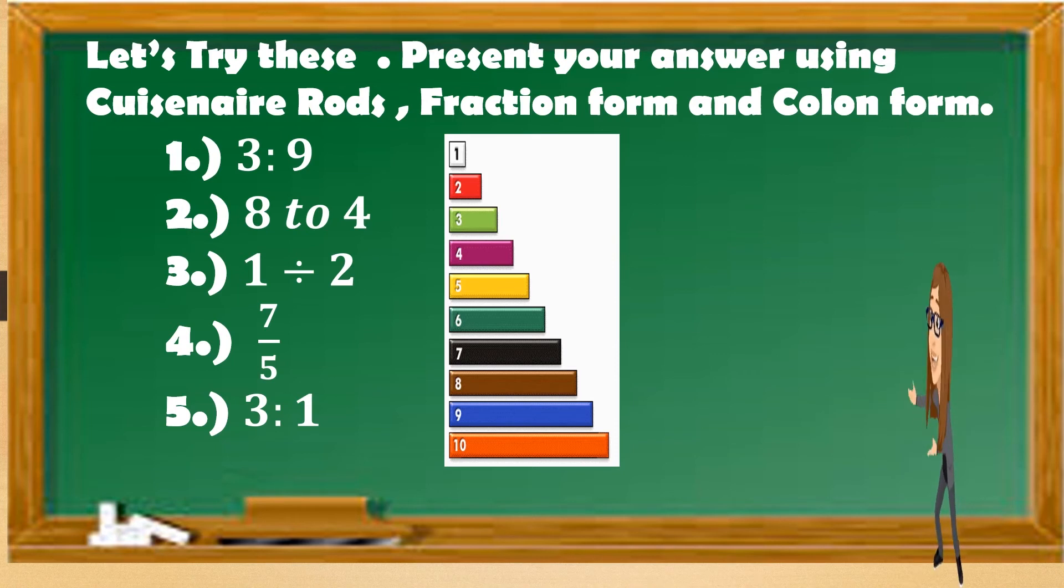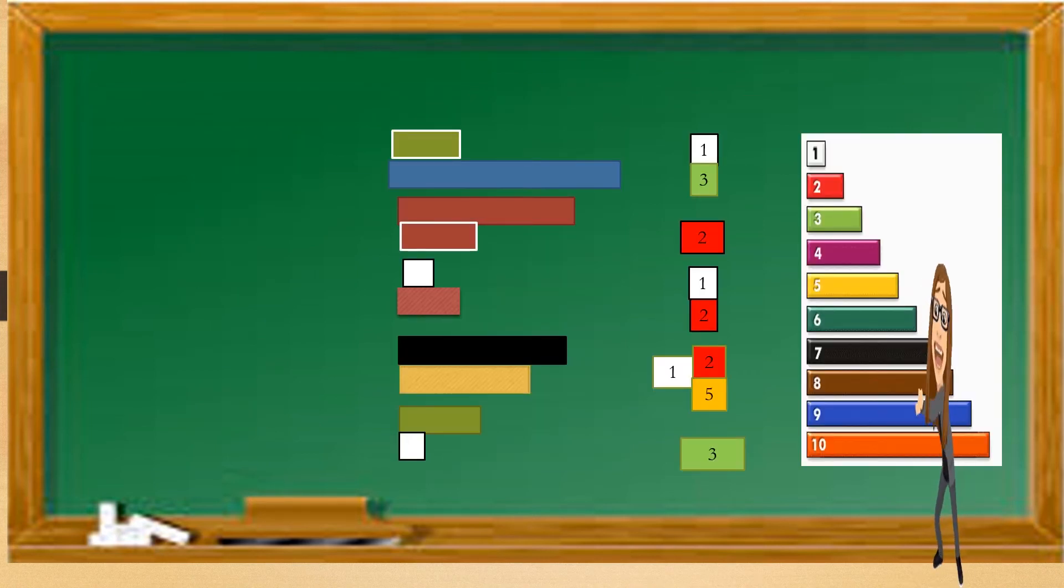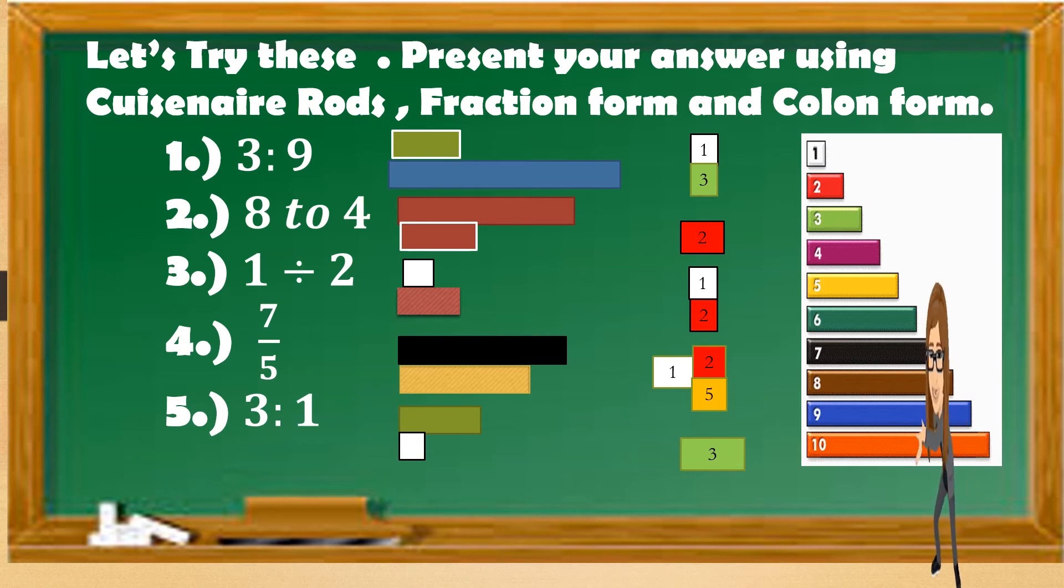Let us see your answer. 3 is to 9. That is 1 to 3, or 1 third lowest term. And 8 is to 4. Lowest term is 2 to 1, or 2 over 1, or 1 half. 7 to 5, or 1 and 2 fifths. 3 is to 1, or 3 over 1.